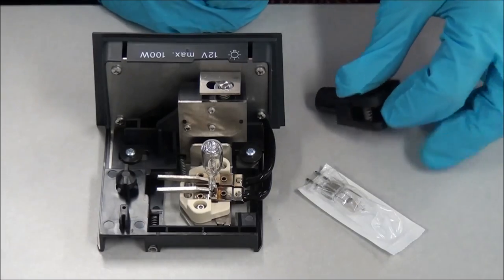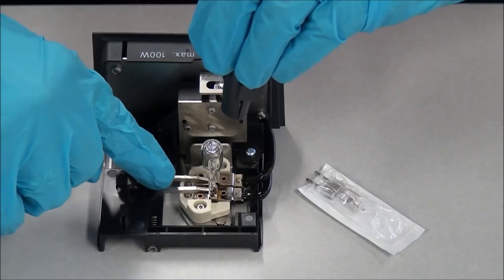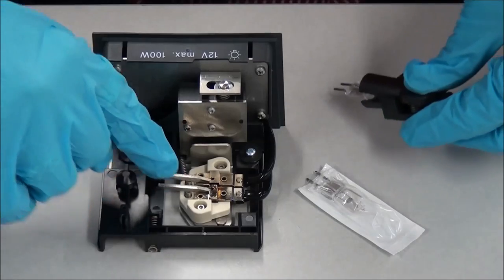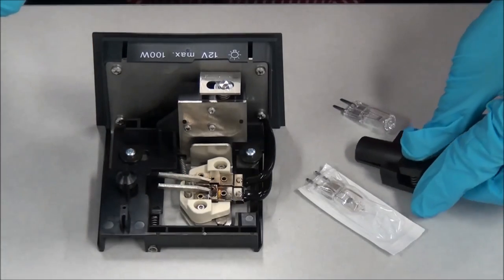While pressing down on both spring-loaded clips, grasp the old bulb securely with the replacement tool. Pull the old bulb straight up and out of the socket and place it to the side.